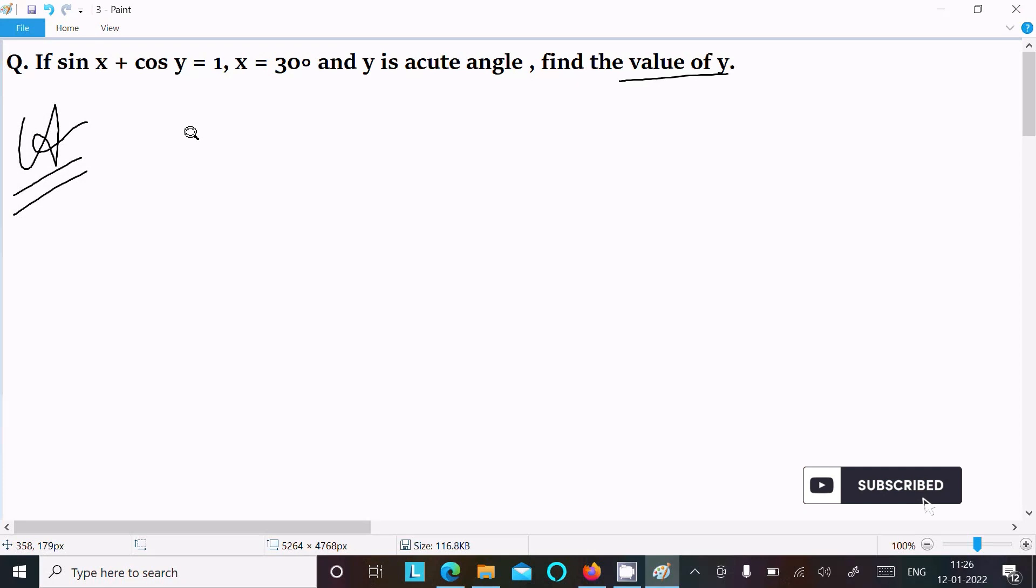So first, here writing the given: sin x plus cos y equals 1. And here x, the value given is 30 degrees, and y is an acute angle, so that y here is less than 90 degrees.